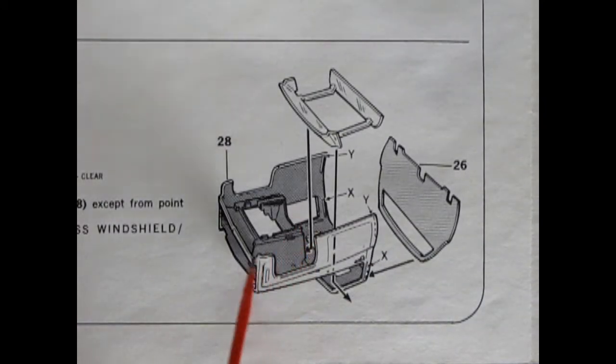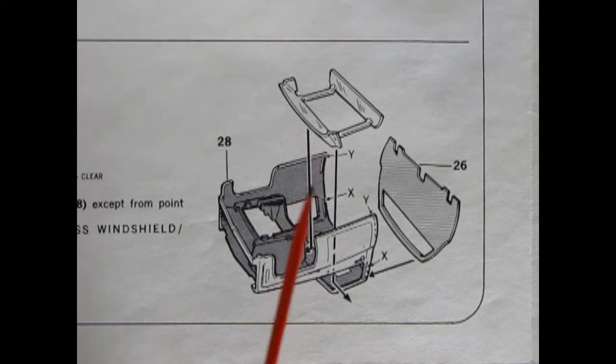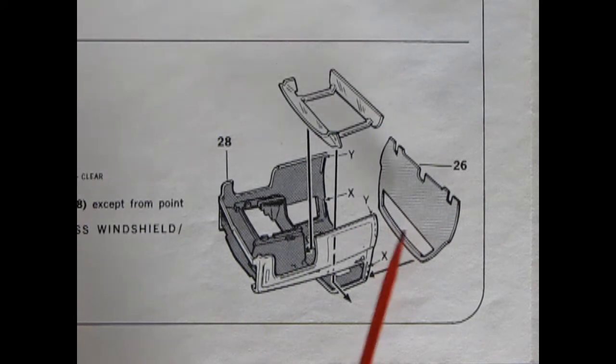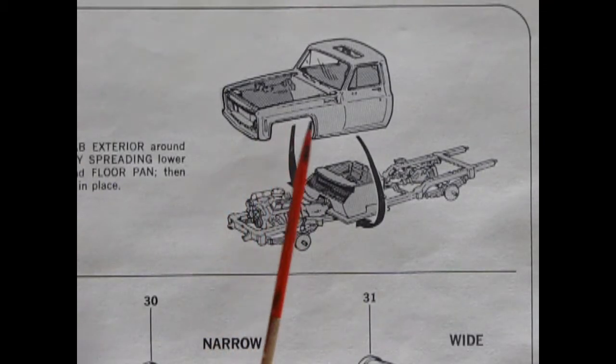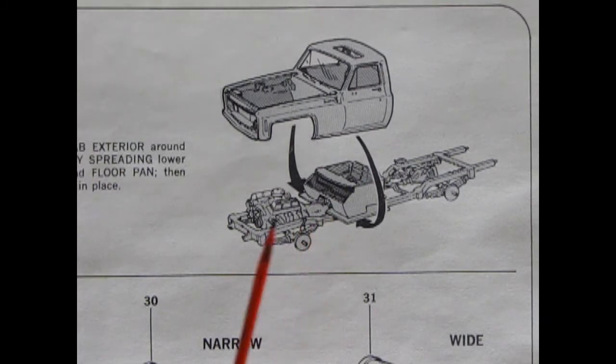Panel nine shows painting the inside of our cab here, and then the window and windshield drop into place, and the back of the cab is separate and glues right on there. Panel 10 shows our cab going down onto our interior and onto our frame.